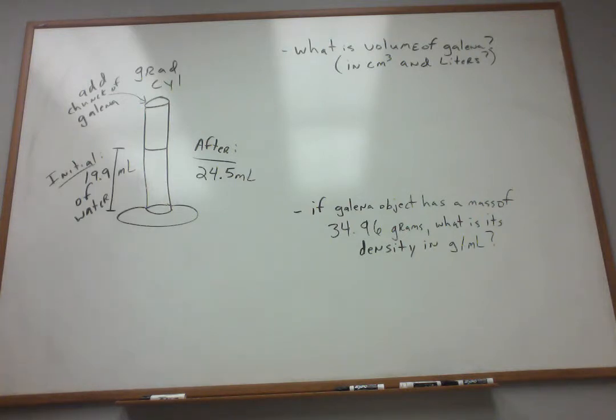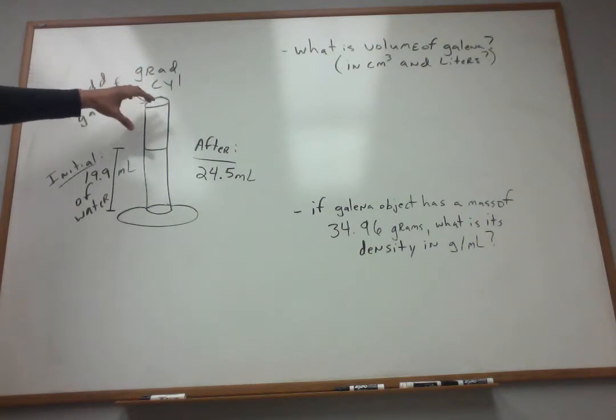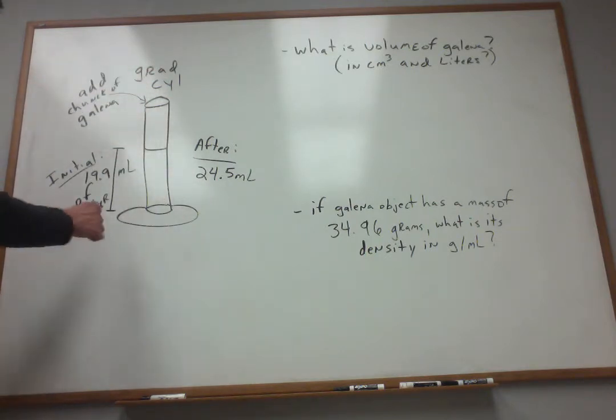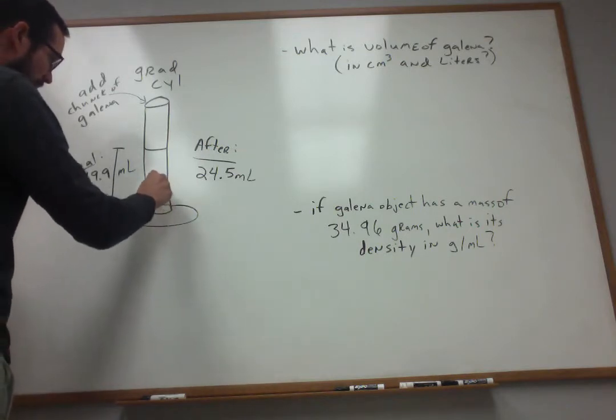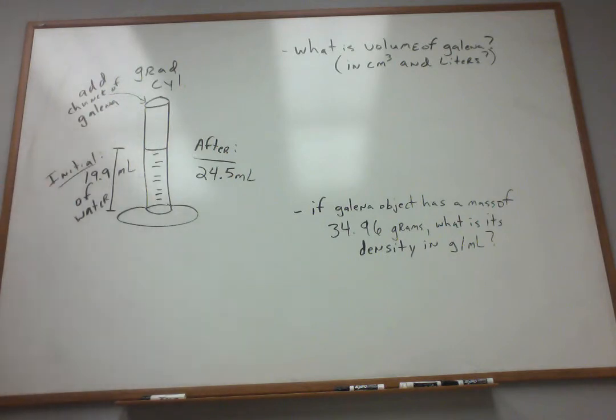That is the measurement of volume and ultimately density by something called water displacement. So in this type of experiment what you might do is you go into lab and you get yourself a graduated cylinder. That's that long tube with a base and then the graduation marks along the tube that tell you how many milliliters of volume are approximately contained within the tube. It's used for general purpose estimation of volume in the lab.